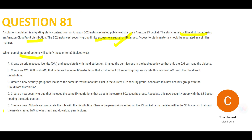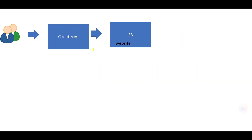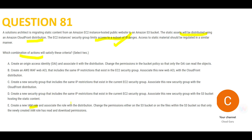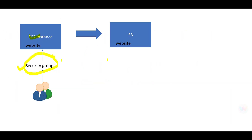Option E says create an IAM rule for the distribution. We do not use IAM rules here — users accessing the website can be anyone. They may not be registered in the IAM repository. Only Amazon employees might have IAM users created. You cannot limit IP ranges using IAM, so this is a wrong option.